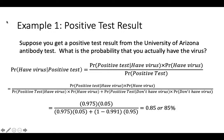That is why, if you get a positive test result, public health authorities will advise you to isolate yourself, because it is very likely that you have the virus, even if you have no symptoms. Your physician will also likely verify the antibody test result with an even more sensitive and specific test, such as a polymerase chain reaction test, which is the gold standard test for the coronavirus.